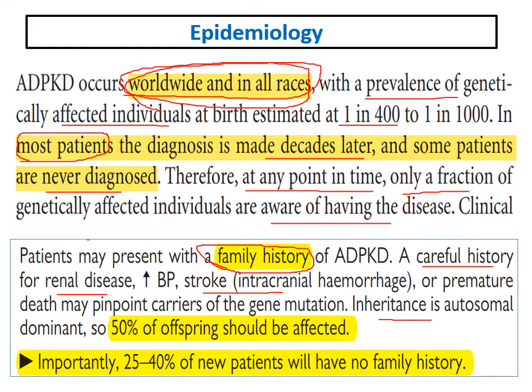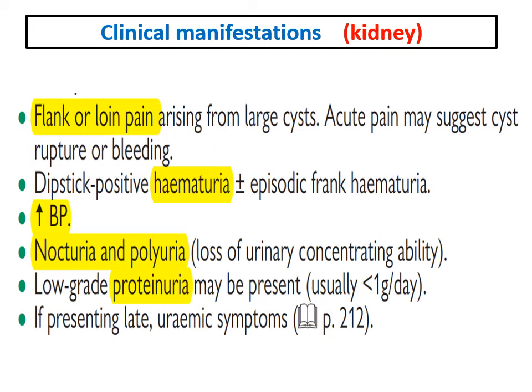Inheritance is autosomal dominant, so 50 percent of offspring should be affected. However, an important note: 25 to 40 percent of new patients have no family history and are caused by new mutations. A careful history for renal disease, hypertension, stroke, or premature death should always be obtained.